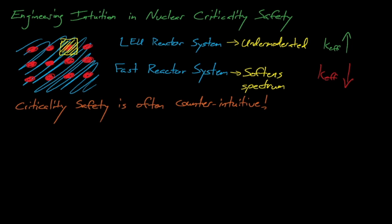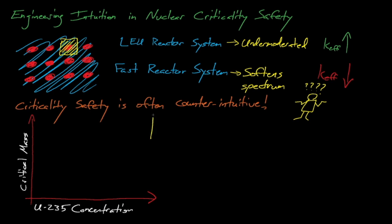By extension, the viable actions we can take to avoid a criticality accident will actually vary from system to system. Let's consider one other example of how proper safety actions might be system-dependent. Let's consider a system that involves some volume of a uranium-235 solution, perhaps uranyl nitrate.